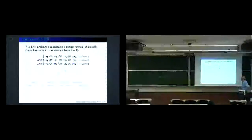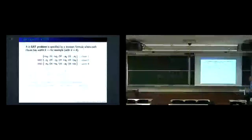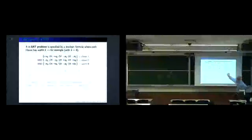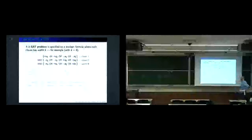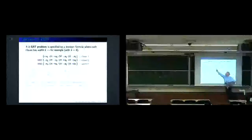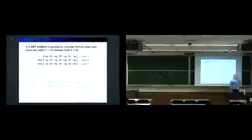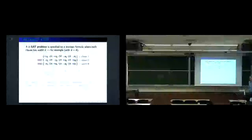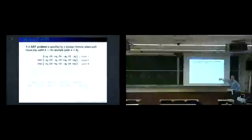Each clause is relatively easy to satisfy because it's enough to have any one literal equal to one. If you just assign variables at random, there is a one minus one-over-two-to-the-K chance of satisfying a clause. But you need to satisfy all of them and there will be many.